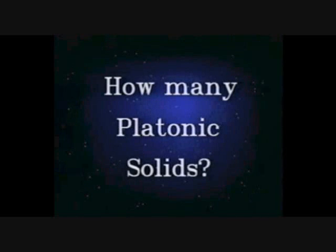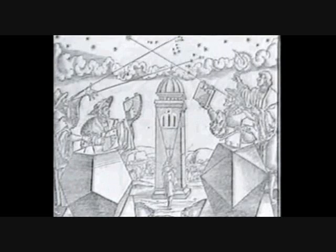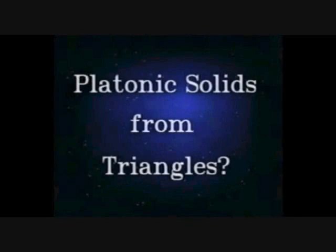Over 2,000 years ago, a mathematician named Euclid wrote a book called The Elements. This book is the basis for most of today's high school geometry courses. The grand finale of The Elements is a section about the Platonic solids, in which Euclid shows there are exactly five. His explanation goes something like this.